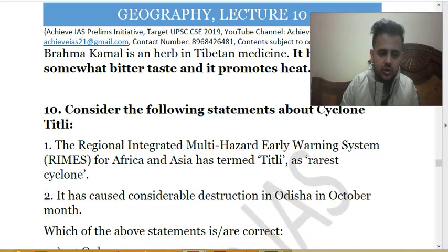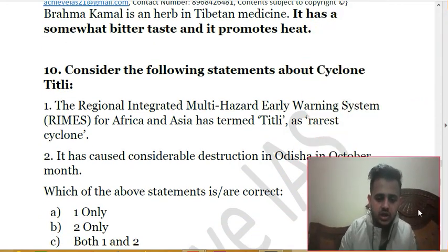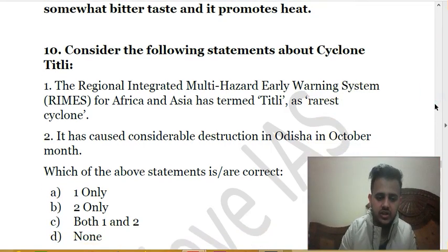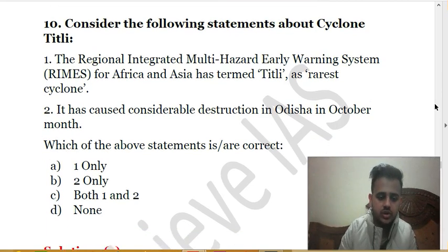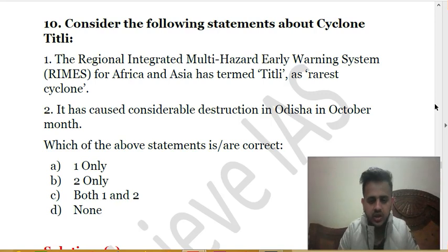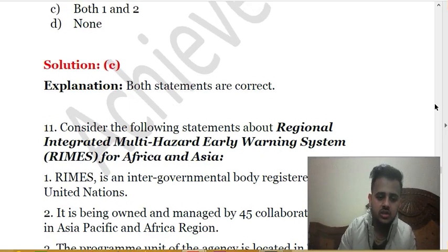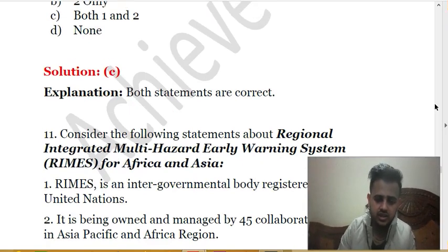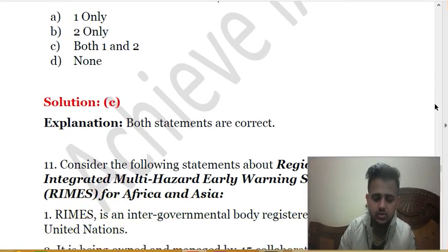The tenth question considers statements about Cyclone Titli. (1) The Regional Integrated Multi-Hazard Early Warning System for Africa and Asia — RIMES — has termed Titli the rarest cyclone. (2) It caused considerable destruction in Odisha in October. Both statements are correct. RIMES defined it as the rarest of rare cyclones, and it caused considerable destruction. So both one and two are correct.